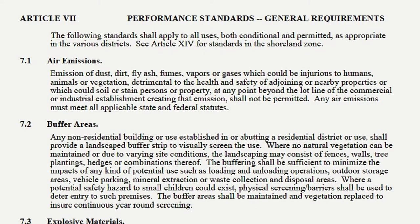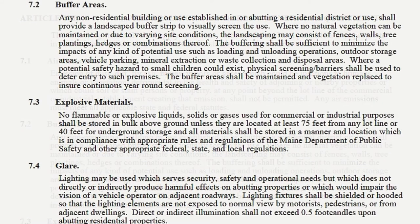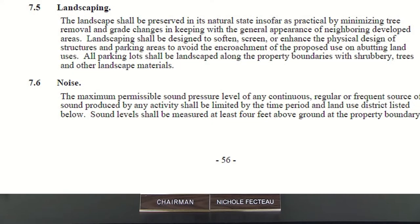Some examples of performance standards are: air emissions, buffer areas, glare from lighting, landscaping, noise, water and sewer and the ability for the town or the land to handle that, and parking. All of those requirements are right in the land use ordinance for you.